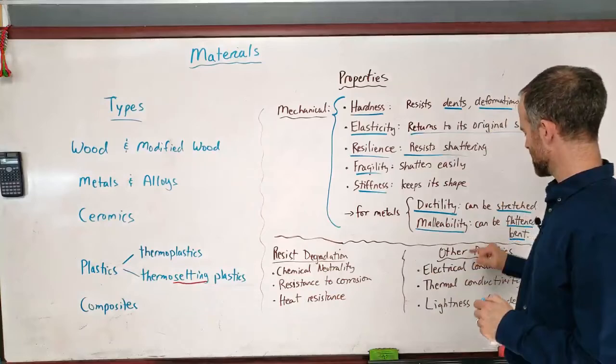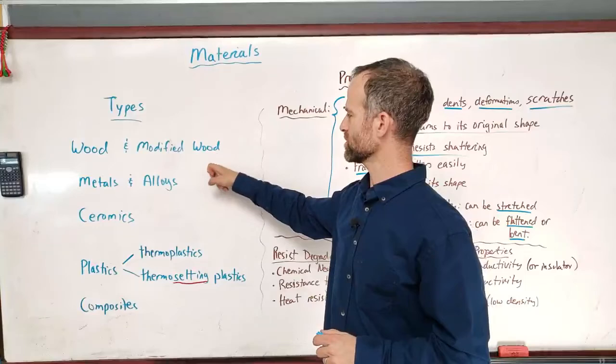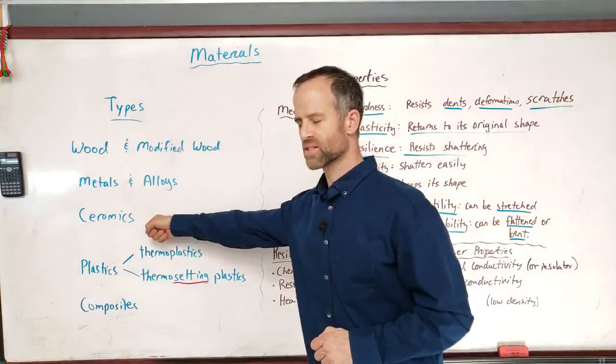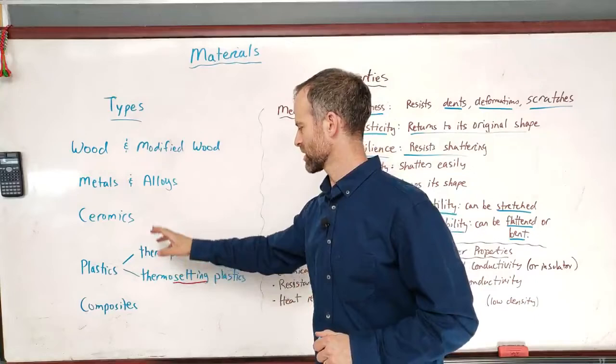How do things degrade? Well, wood and metals degrade with water. Wood rots. Metals corrode. Ceramics degrade with acids or bases. They're also fragile, but that's not degradation. So it's mostly chemicals. Plastics degrade with sunlight.